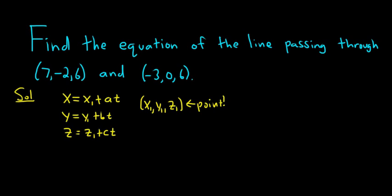What about a, b, and c? Those are called direction numbers. They are components of what's called the direction vector. This is a parallel vector, and this vector is parallel to our line.